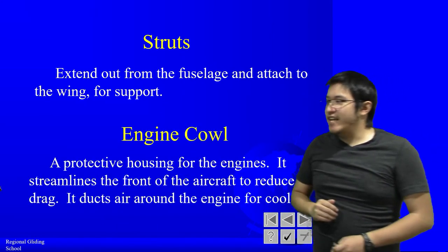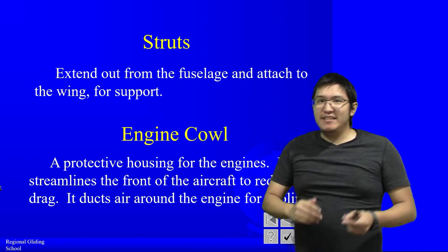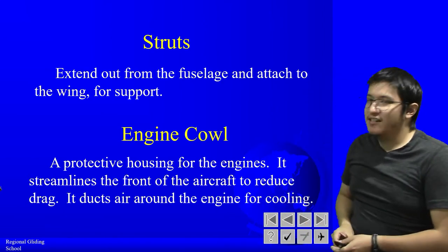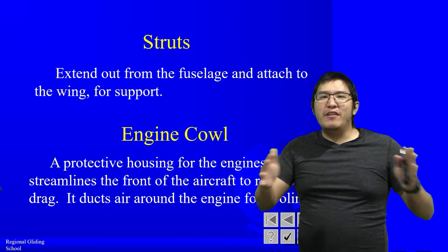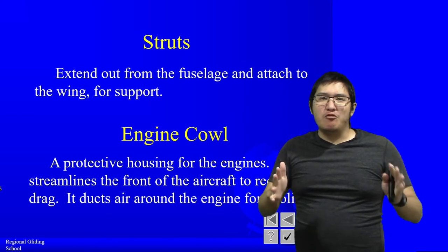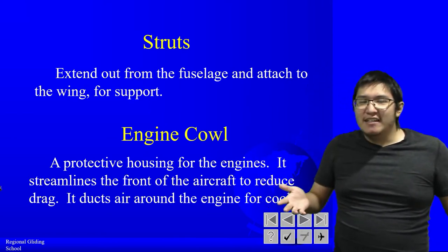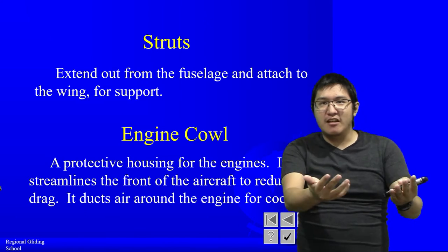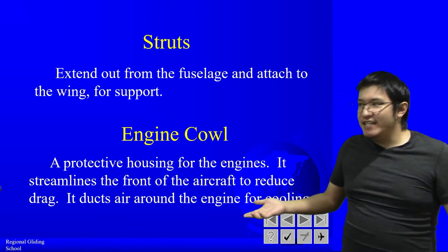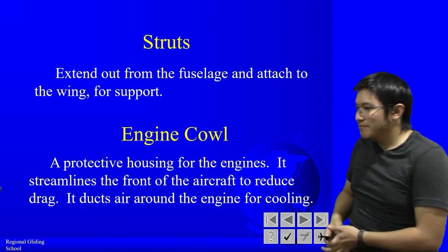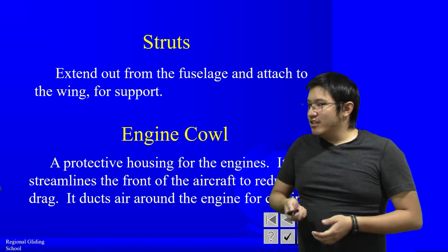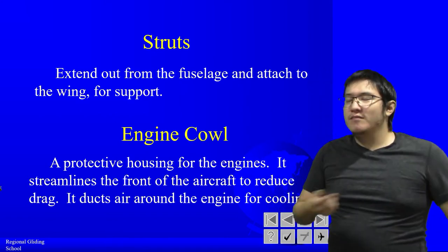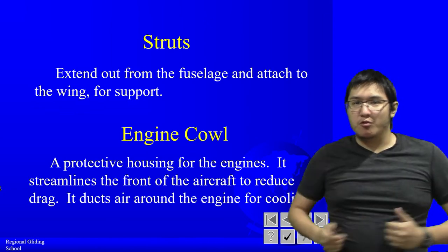Next up is the engine cowl. This is the protective housing for the engine. An engine is very blocky and rough and creates a lot of drag, so we put it in a case that is rounded, more streamlined and aerodynamic. There are air ducts usually at the front, and those cool the engine as the airplane moves forward.